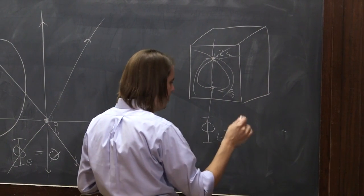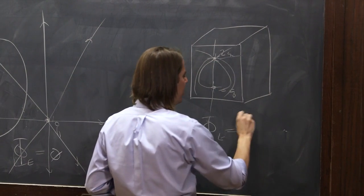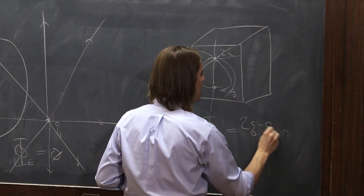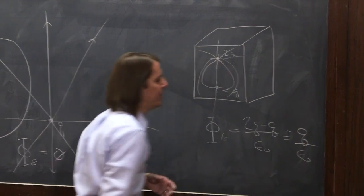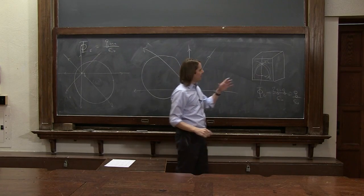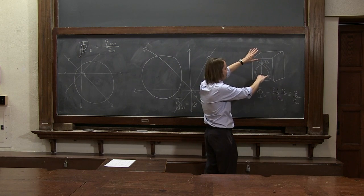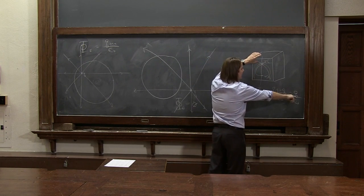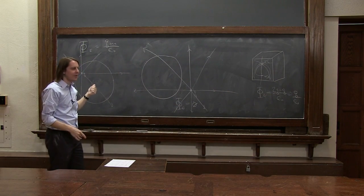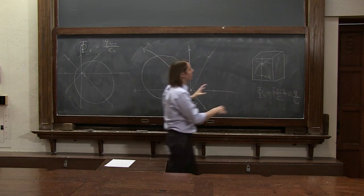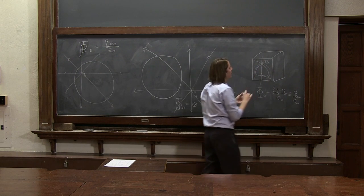Phi E, we would get the right answer. We know from Gauss's law it would be 2q minus q over epsilon 0. It would be q over epsilon 0. If we did all the field lines and counted, I can't draw it accurately, but if we did it, we would actually get the answer of q over epsilon 0, which matches Gauss's law. It's the total charge enclosed in the volume.